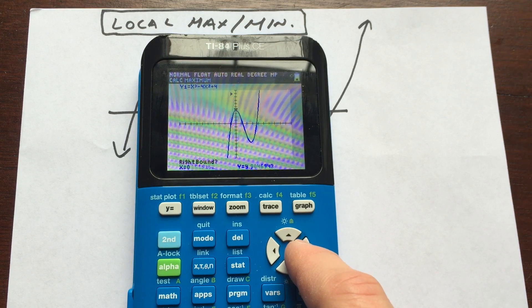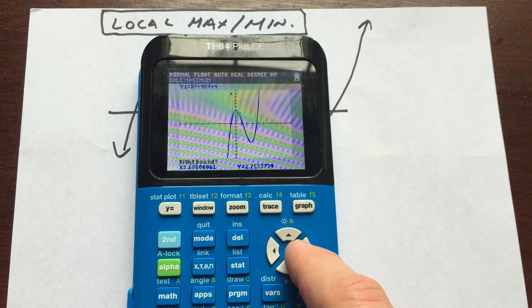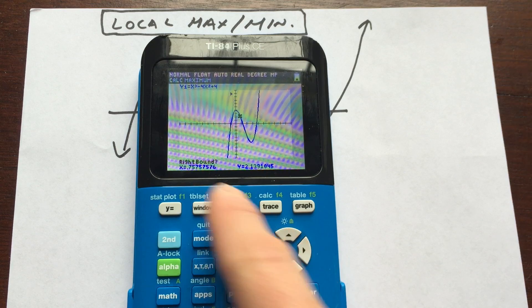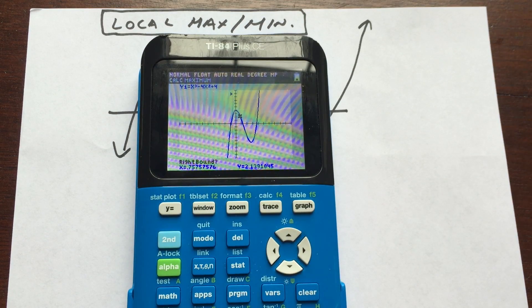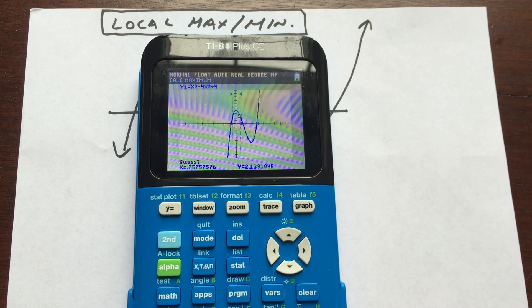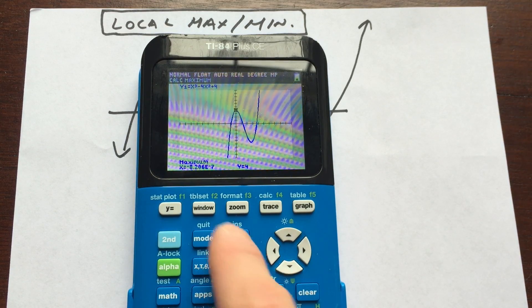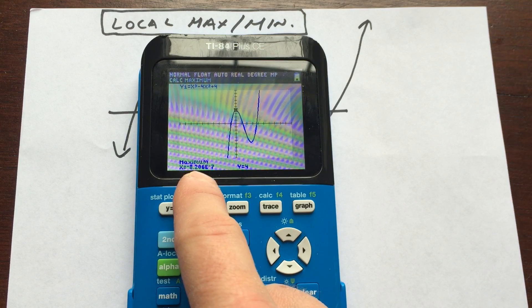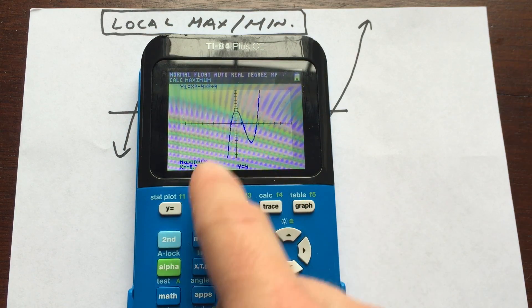And then I'm going to arrow to the right of that high point. You want to make sure you go past the high point. Otherwise, it's not going to give you an accurate value. And right bound, I'm going to press enter. And then it says you can see guess. I'm going to hit enter one more time. And it finds that high point in between those two points that we selected.